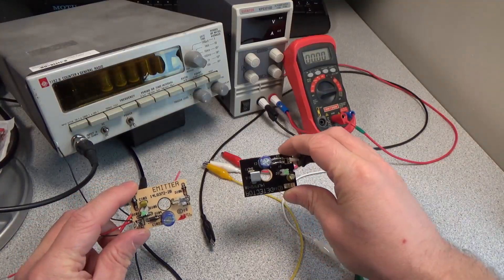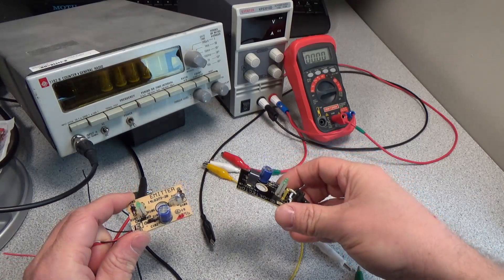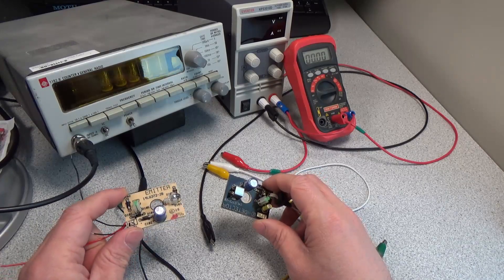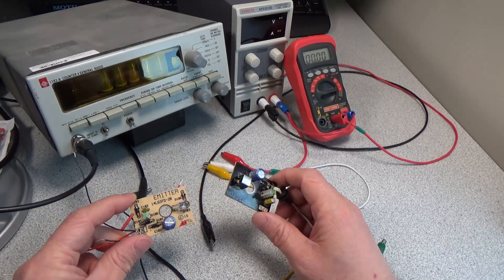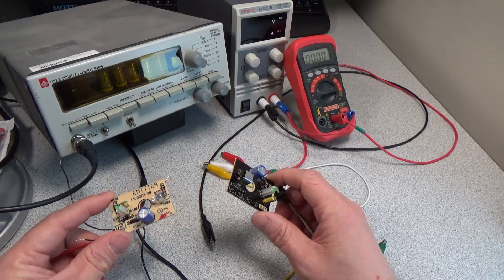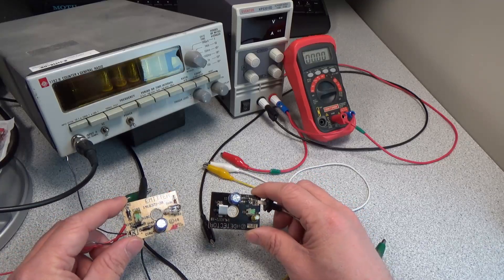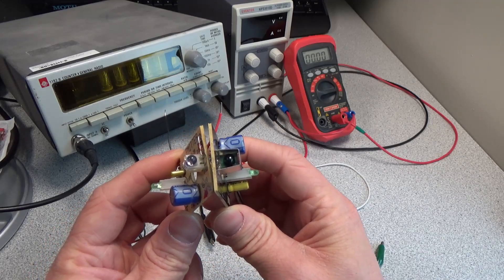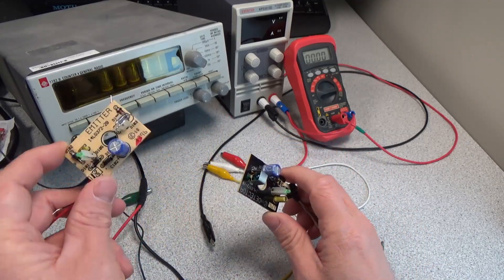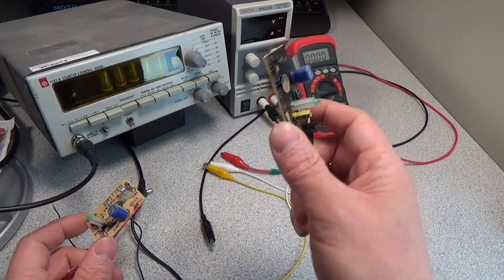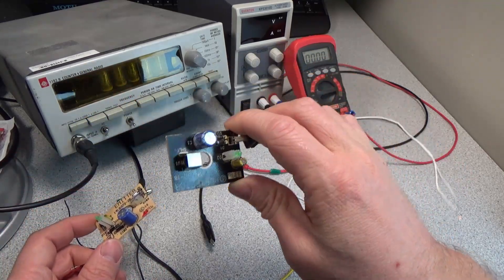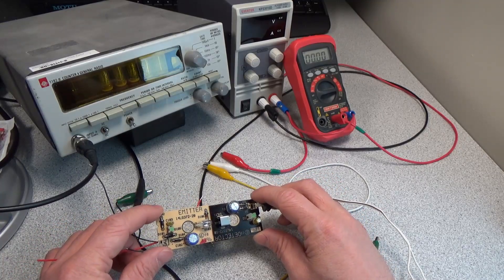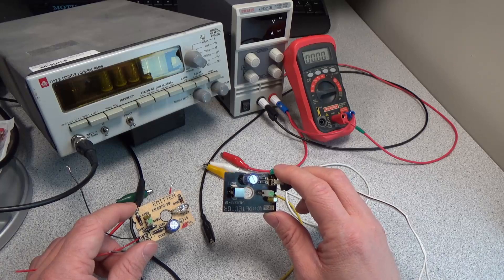That's the basics of how these detectors work. They're pretty universal because they're just using that current loop. Any emitter-detector pair that uses a current loop would be compatible as long as the infrared they share is in the same frequency band. If you had one that operated at 200 hertz and 80 kilohertz, this detector probably won't find that signal and won't work.